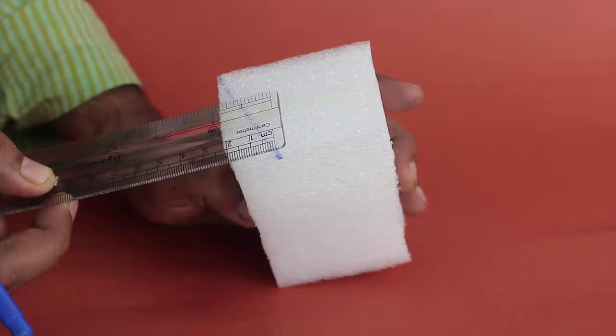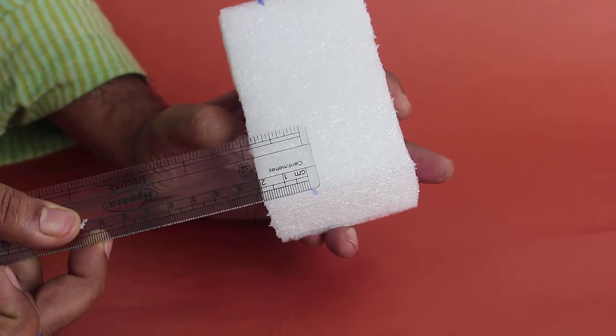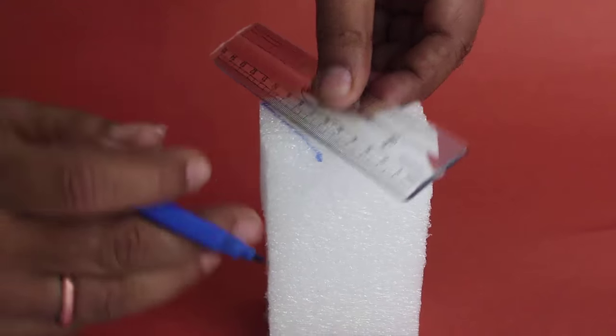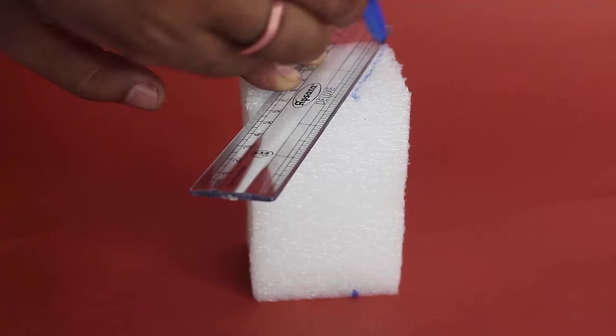We will first try to make a triangular prism from a cuboid of foam rubber. This prism is a 3D structure made of two same triangles as the base and three rectangles on the side.